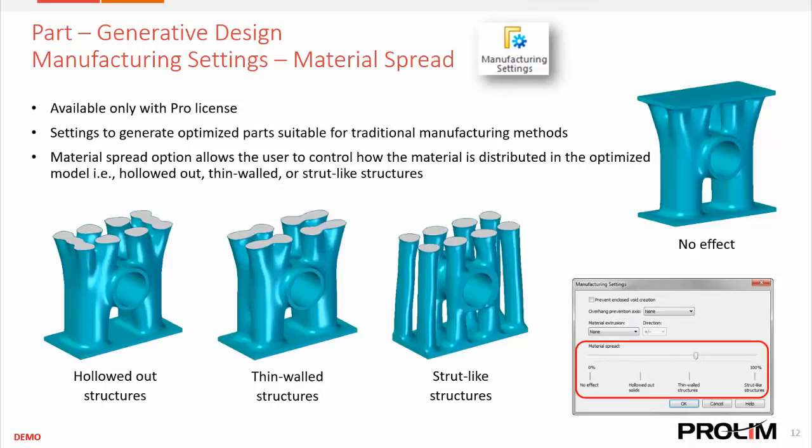Another option is material spread inside the manufacturing settings. This allows us to change between hollowed-out type structures, thin-walled structures, or strut-like structures, and we can change how these supports are generated with our generative design studies.